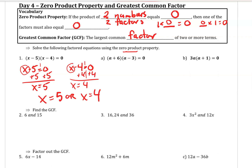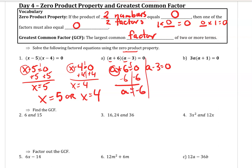Go ahead and try letter a and b on your own. Hopefully you set a plus 6 equal to zero and a minus 3 equal to zero. If a plus 6 equals zero, subtract 6 from each side — a would have to equal negative 6. For a minus 3 to equal zero, add 3 to each side — a would have to equal 3.